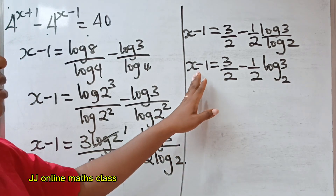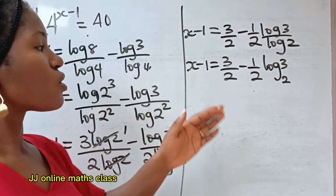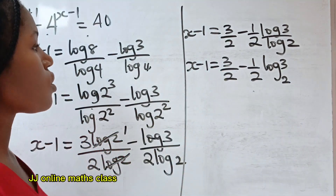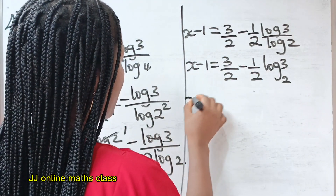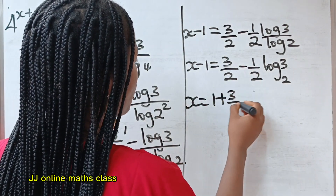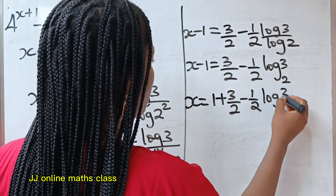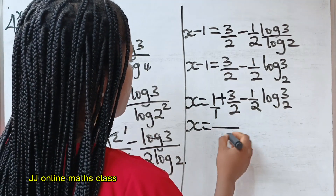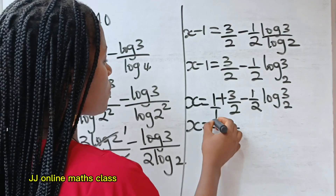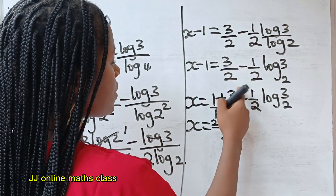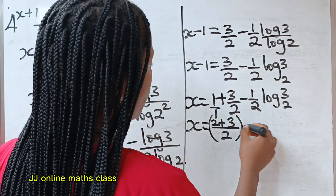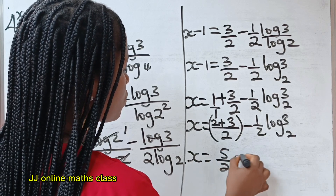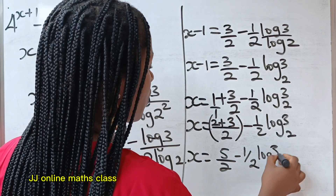Remember that we are asked to find the value of x and not x minus 1. So in order to get the value of x, we need to transfer this minus 1 to the other side of the equation. This minus becomes plus. So we have x is equal to 1 plus 3 over 2 minus half log 3 base 2. The LCM of 1 and 2 is 2: 2 plus 3 gives 5, so x is equal to 5 over 2 minus half log 3 base 2.